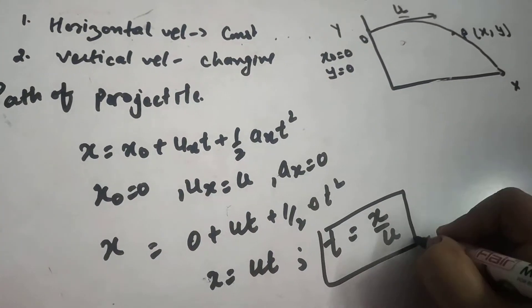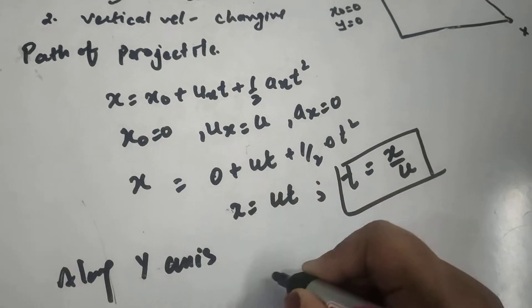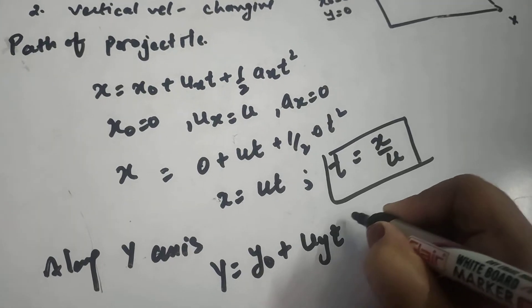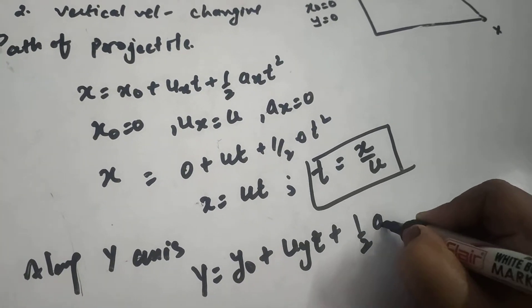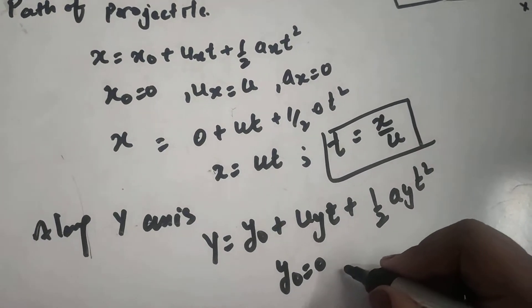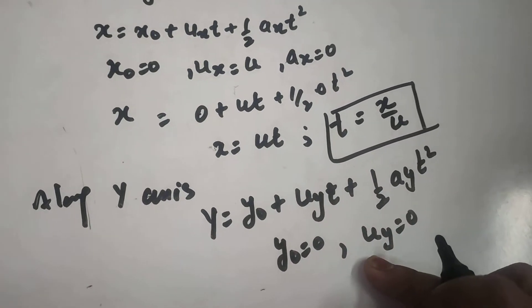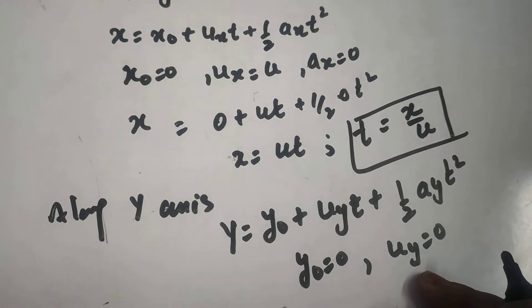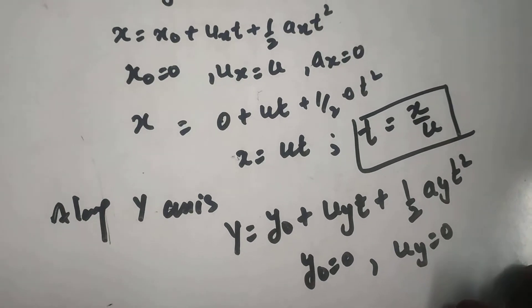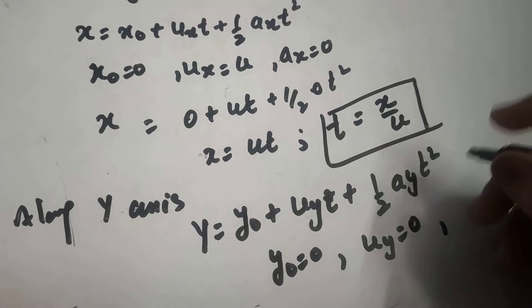Now similarly along Y axis, the equation will be Y equals Y naught plus UY·T plus half AY·T². Again Y naught equals 0. UY is again 0 because U is the initial velocity and we have given its horizontal projection, so it means its vertical component of initial velocity is 0.